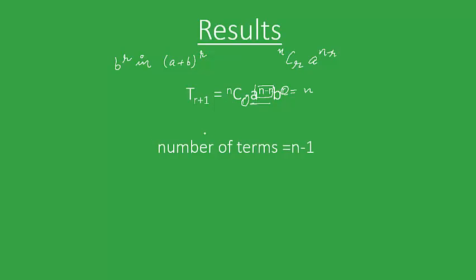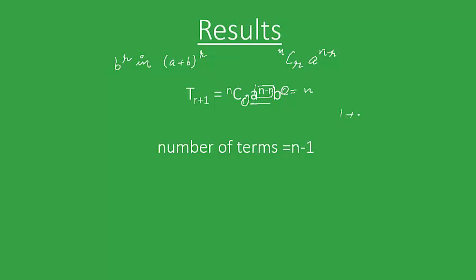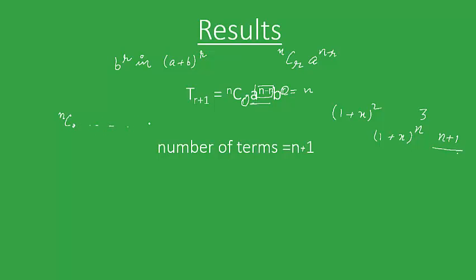The next thing to note is how to find the number of terms in an expansion. When we expressed 1 plus x to the power 2, we got 3 terms. In general, the number of terms in the expansion of 1 plus x raised to the power n will be n plus 1. This is because the coefficients run from nC0 to nCn, that is from 0 to n, which gives us n plus 1 terms.